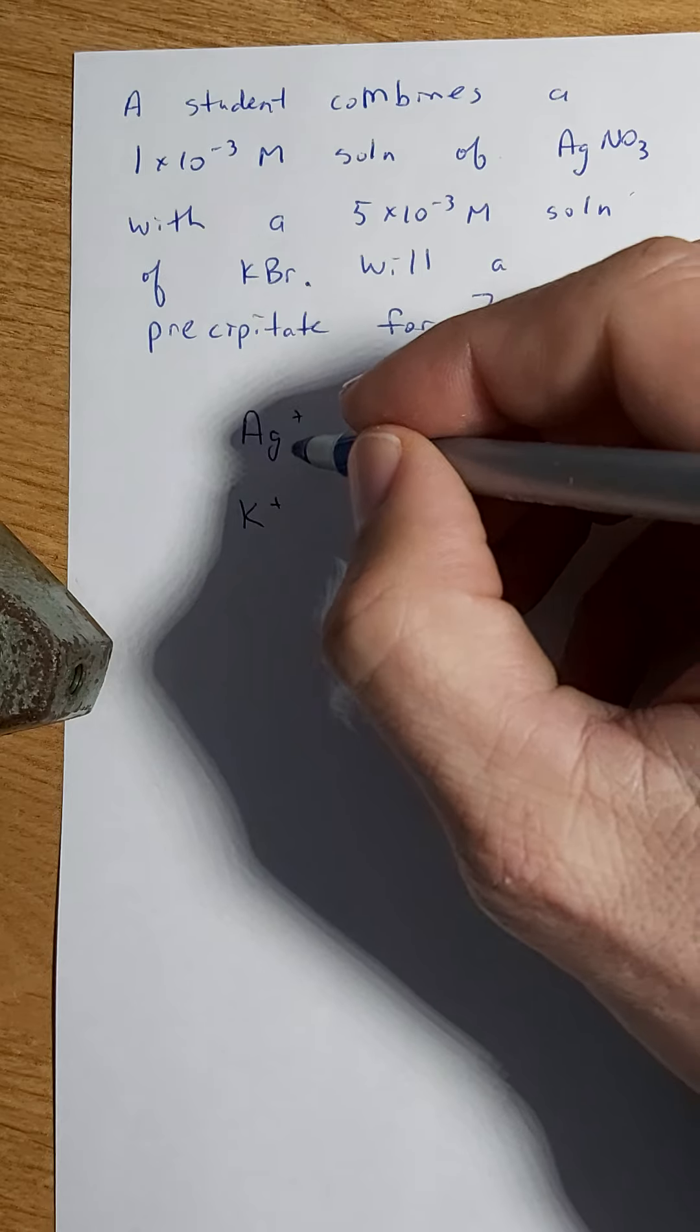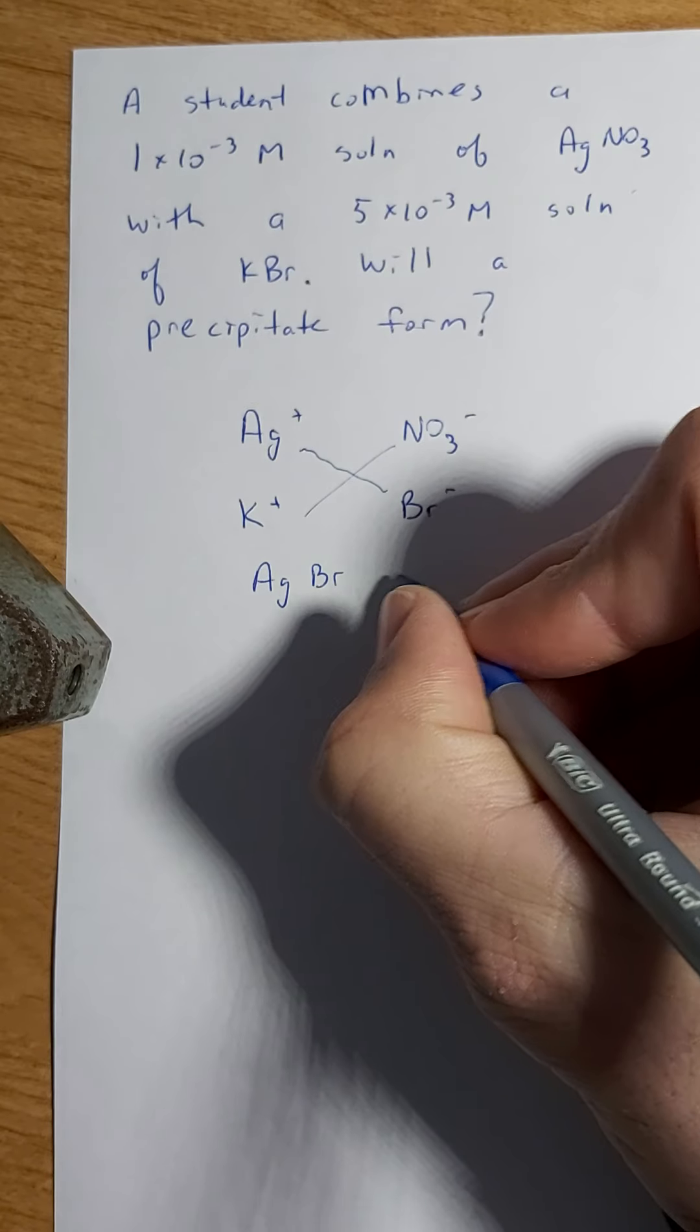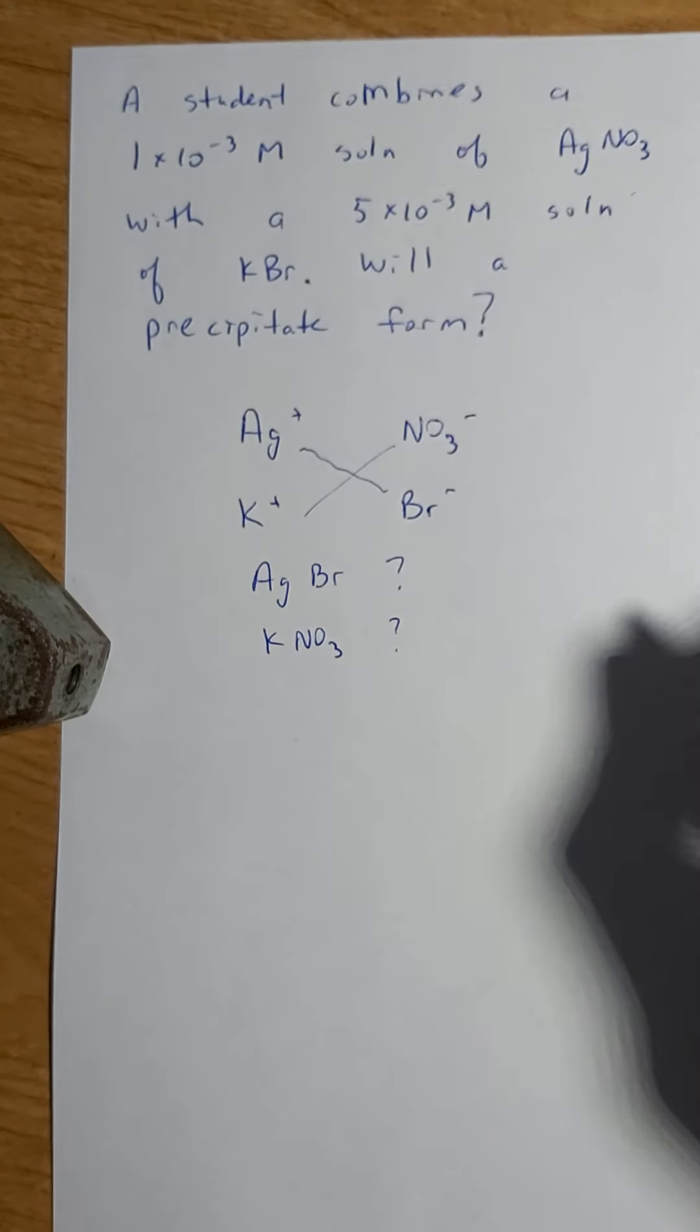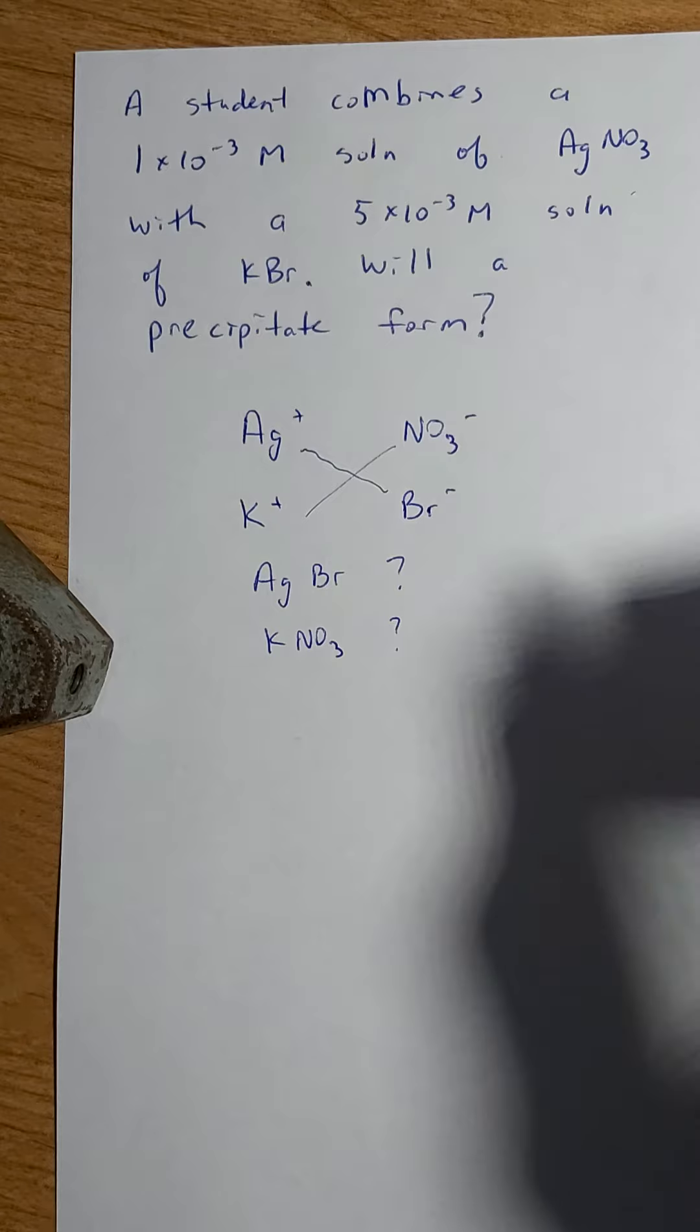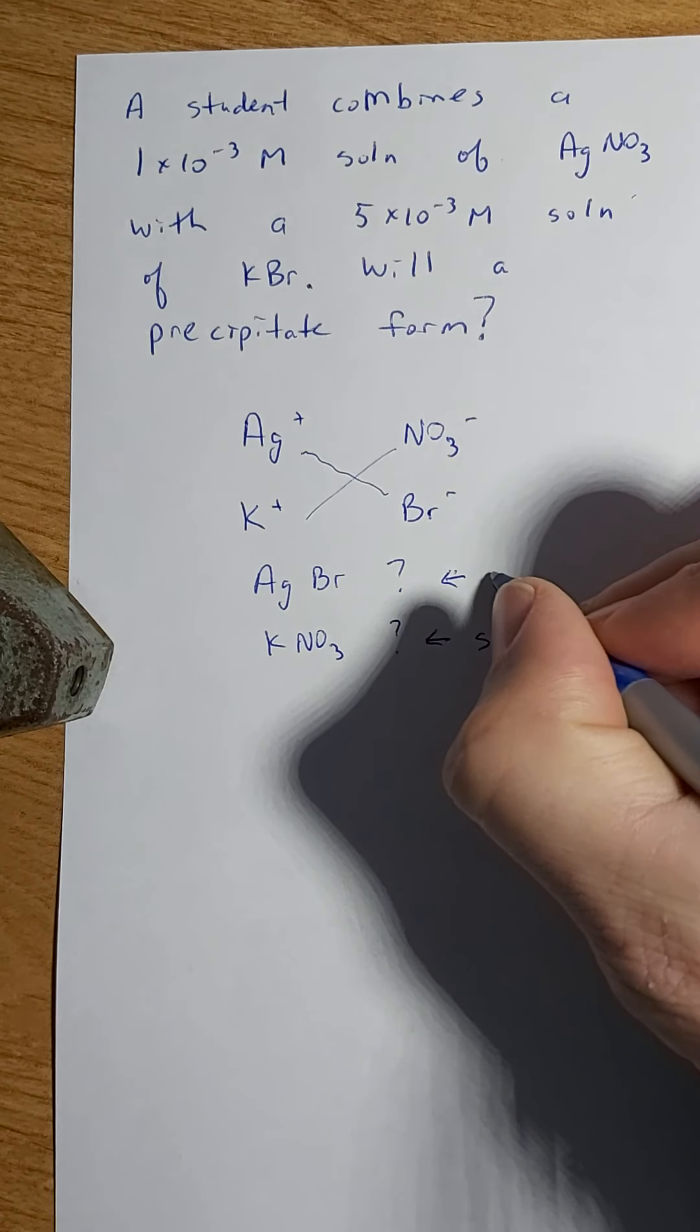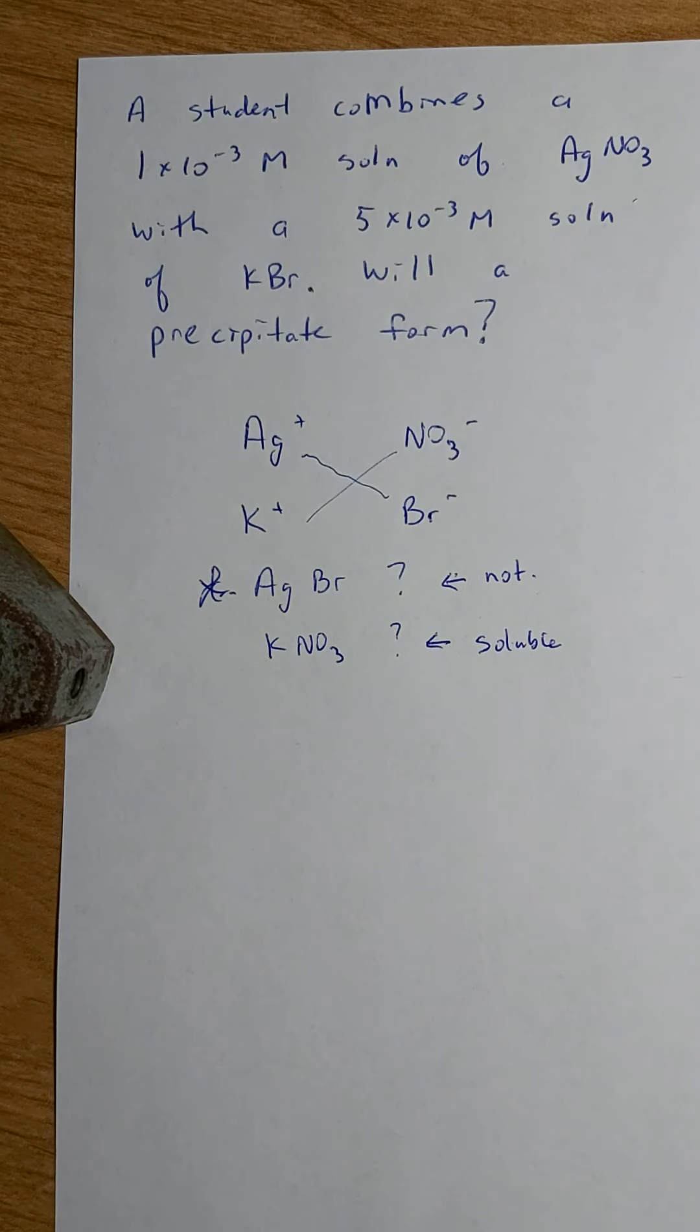We're interested in, would I have partner switches? Would I get AgBr or would I get KNO3? Now, if I look at the solubility rules that you would have used in grade 11, the answer here is that this is soluble and this is not. So this is the one right here that I might be interested in.